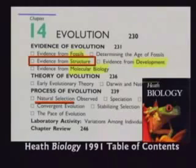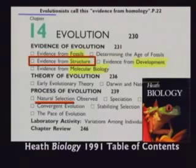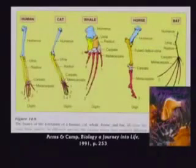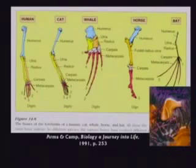They tell the kids, we've got evidence from structure. This is called the homology argument. Did you know you've got two bones in your wrist, radius and ulna? And did you know the whale has two bones in his flipper also called radius and ulna? That proves we're related. That's what they tell them.